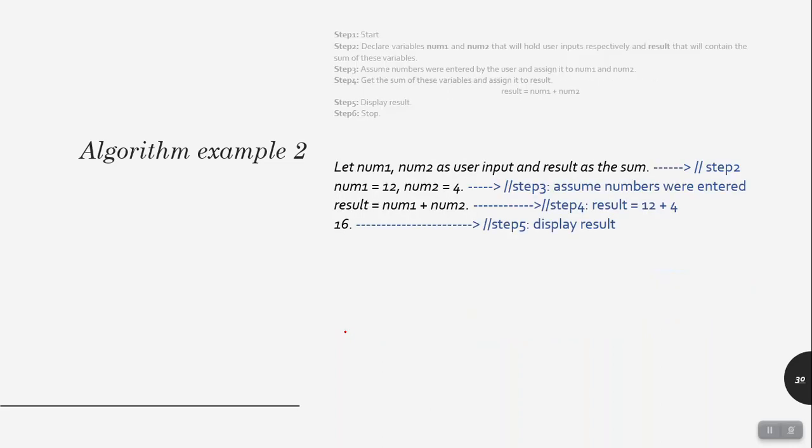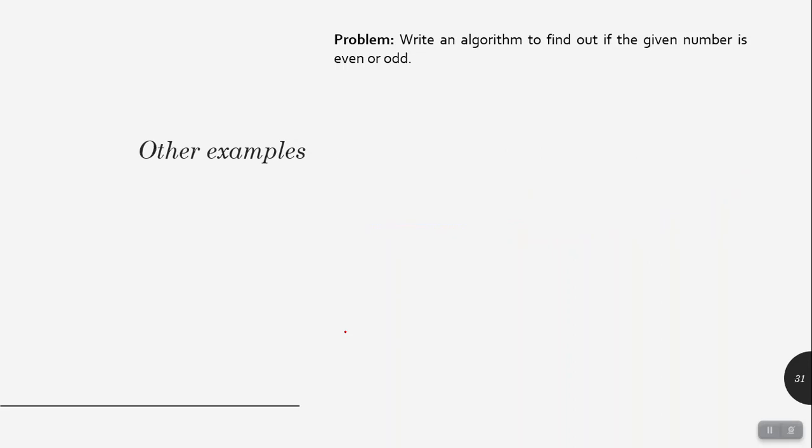This is how a programmer communicates ideas to other people. Through algorithms, we can express how a program works. Most companies and business organizations use algorithms to instruct their newly hired employees on how to do things or how to find the place they were looking for. Here are some other examples.